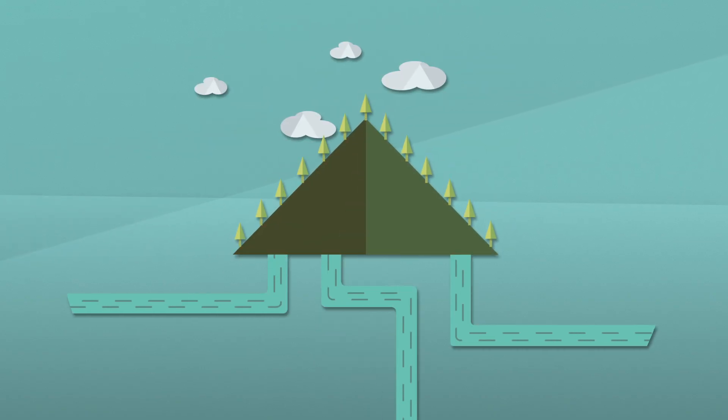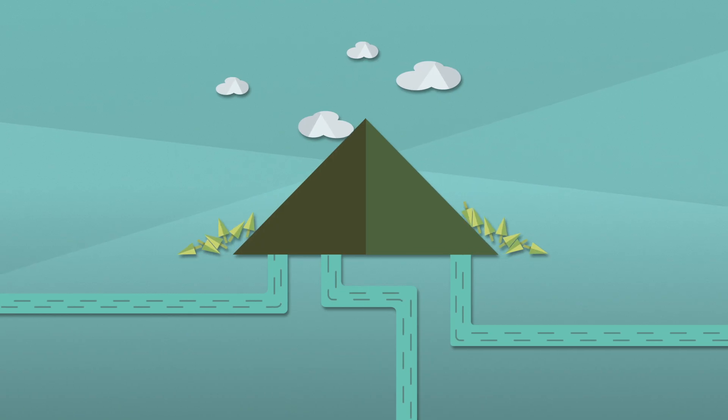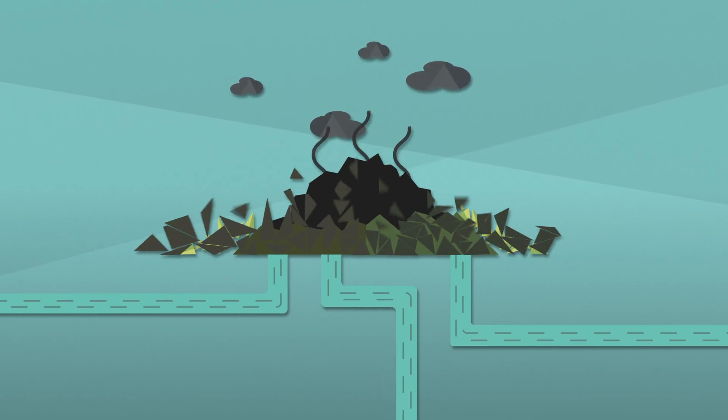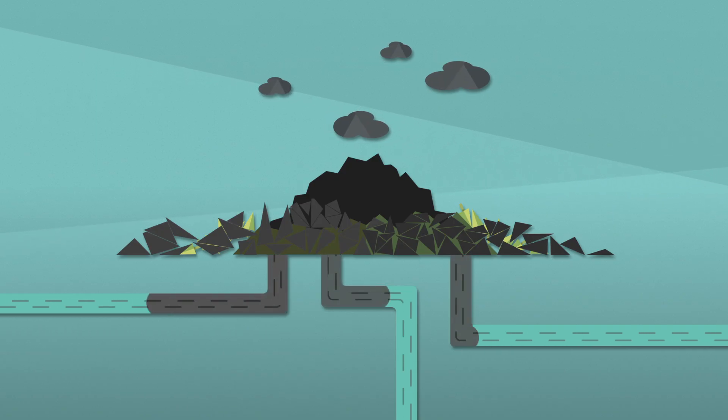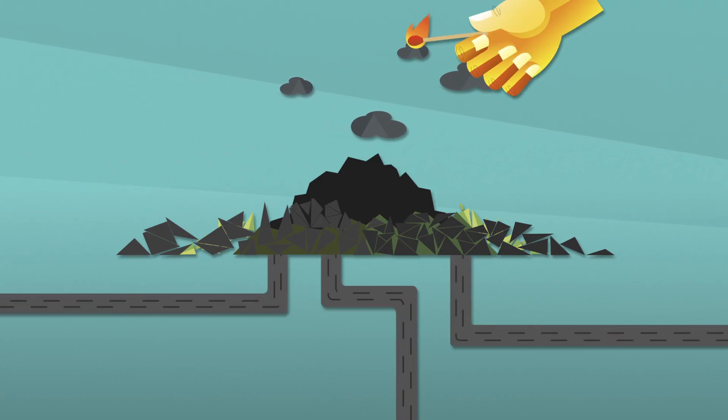In mountaintop removal mining, coal companies clear-cut forests and literally blow the tops off mountains to get the coal. This process dumps millions of tons of waste into our streams and poisons our drinking water. But mining coal is only the beginning.